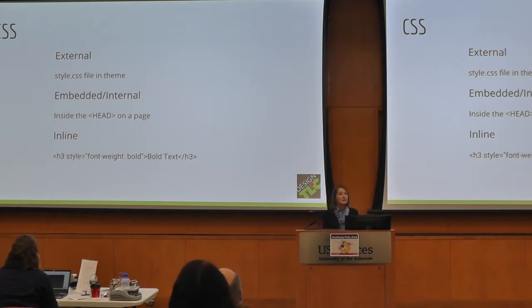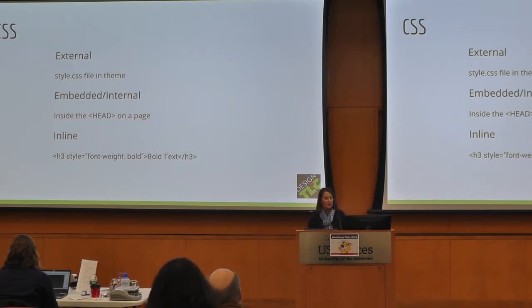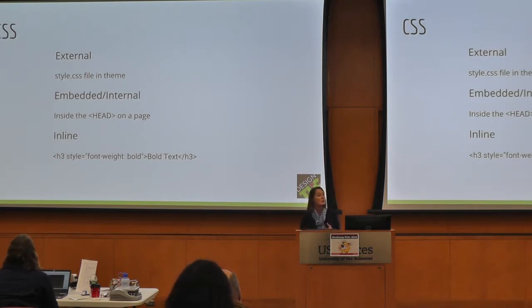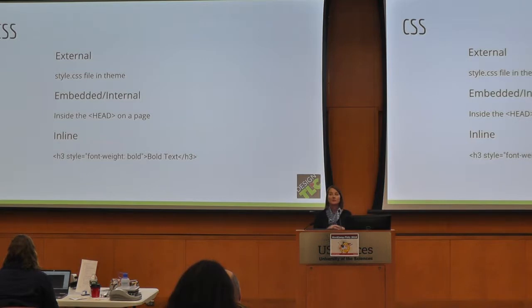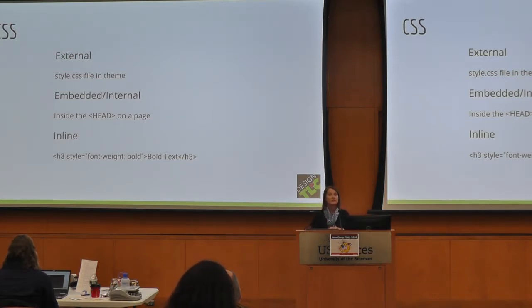We're going to be talking mostly about CSS today. There are three basic types of CSS code. External CSS, which in WordPress we know to be the style.css file within your theme. Embedded or internal CSS would be code you could put into the head section of your code that would apply to that specific web page. And then inline CSS, which we try to use sparingly, is code you actually put inside the HTML to define the styles — it's not a separate style sheet.